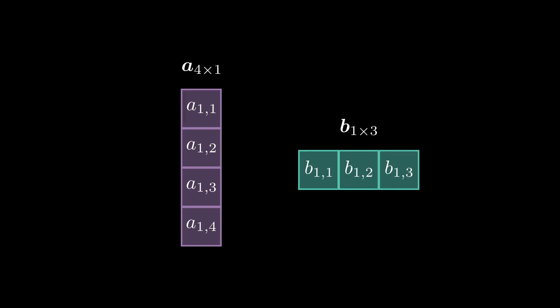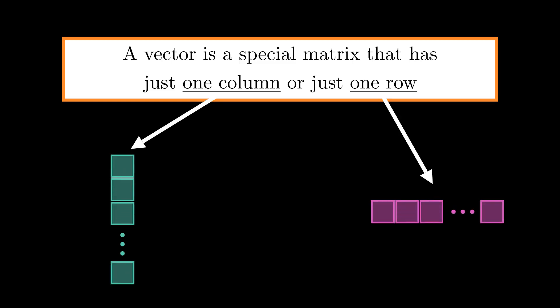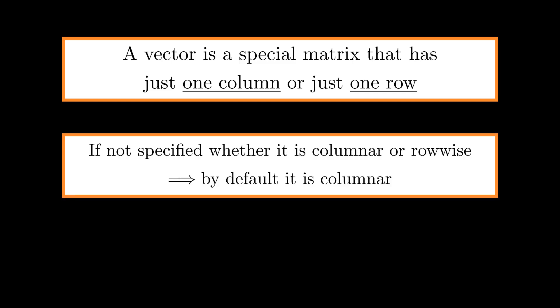Let's put this together. On the left I'm showing a column vector denoted by a subscript 4 by 1, and on the right I'm showing a row vector denoted by b subscript 1 by 3. To summarize: a vector is a special matrix that has just one column or just one row. If it has just one column, it is a column vector — that is the convention. If it has just one row, that is a row vector. When reading an article or paper and you see a vector without specification of column or row, by convention it is a column vector.